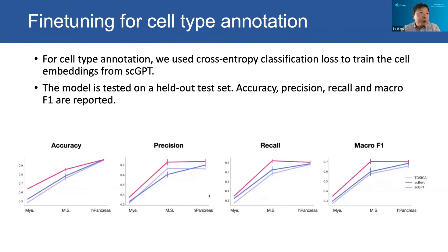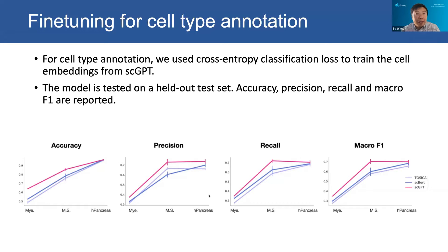We want to test how good SCGBT is for cell type annotations. We find that SCGBT does a much better job in reporting accuracy, precision, recall, and F1 values.